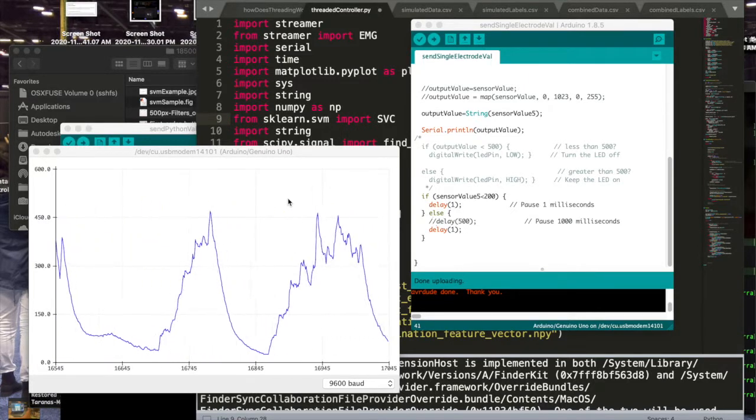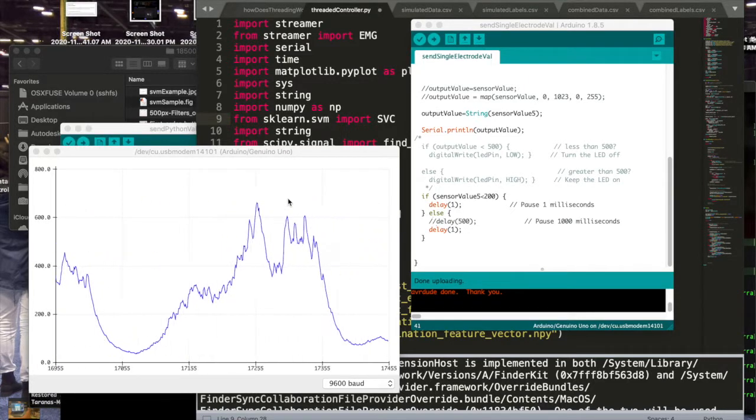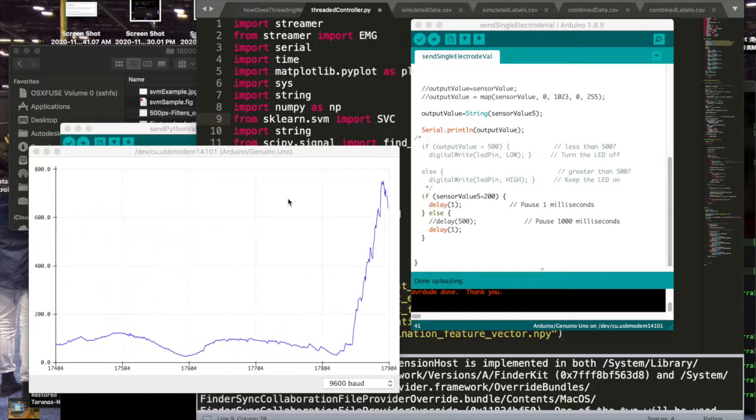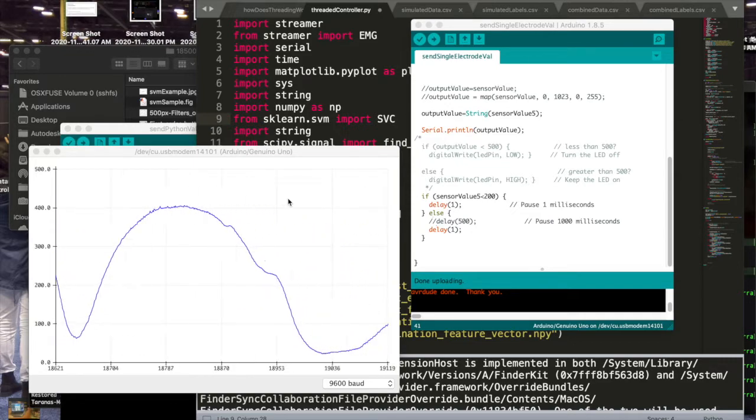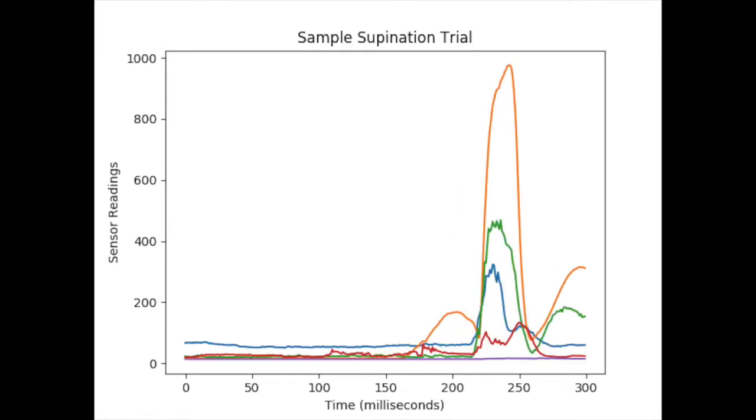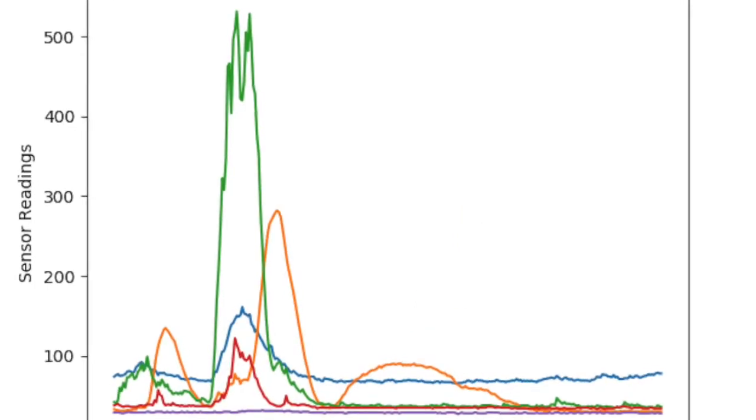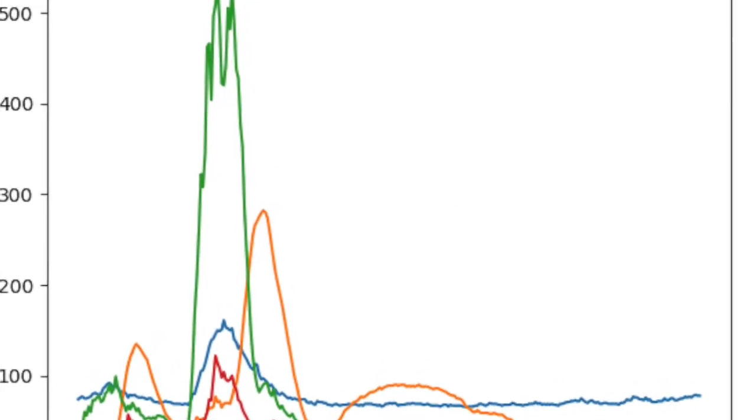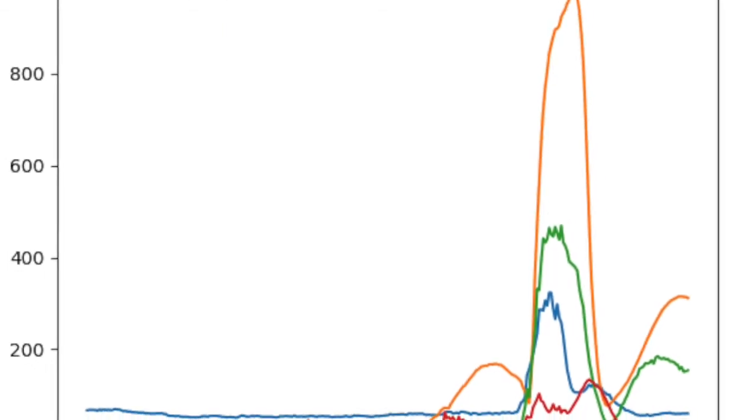Once the signals are read from the electrodes into a microcontroller, they are sent via serial communication to a computer program for analysis. We recorded trials of data for four main different types of movements: wrist flexion and extension, and wrist pronation and supination. We extracted features from the time and frequency domain for each electrode signal to classify the data.